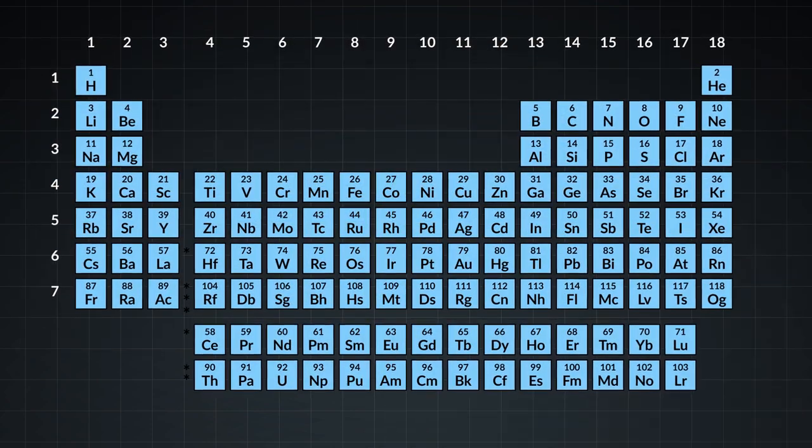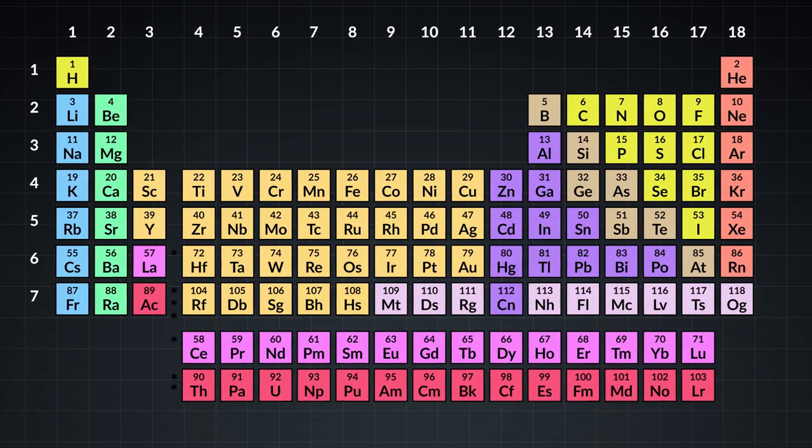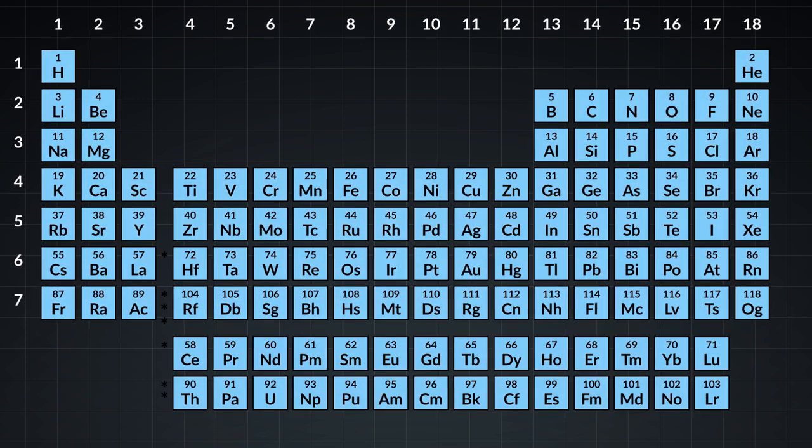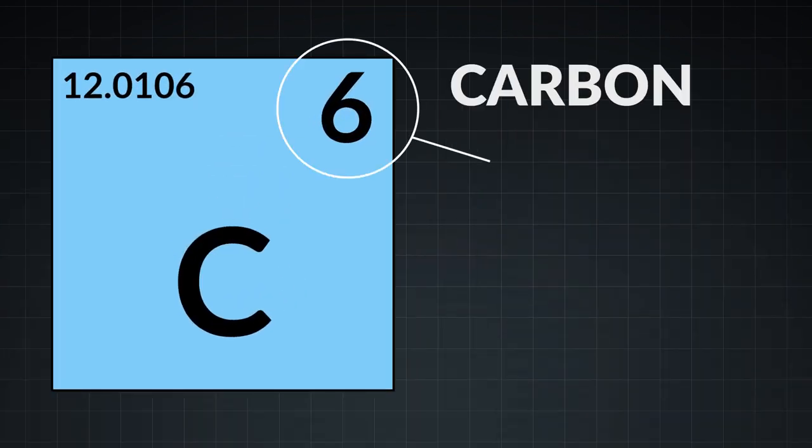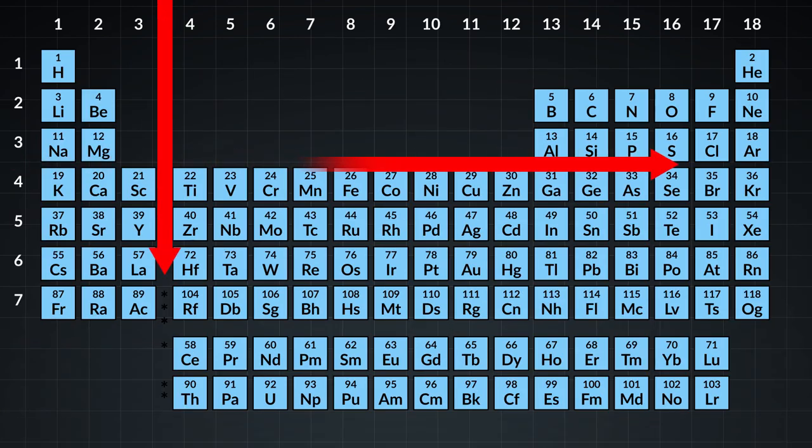The periodic table uses both a periodicity and related groupings to visualize the comparisons and contrasts among all the elements. For instance, the number of protons in an atom, called the atomic number, is a unique property for each element.